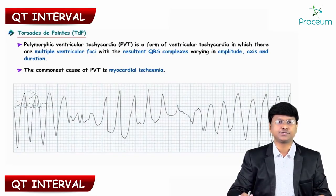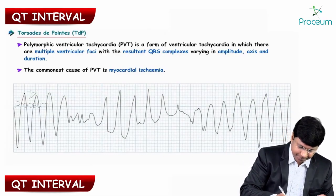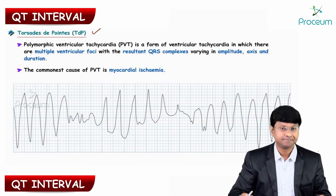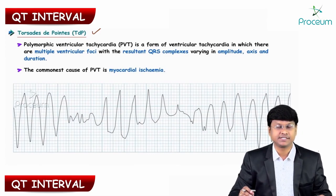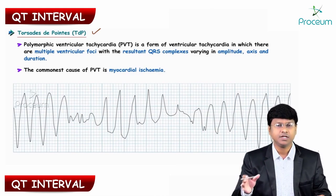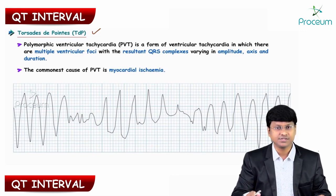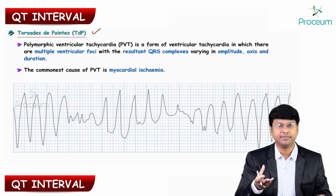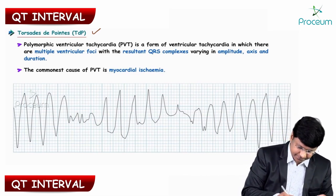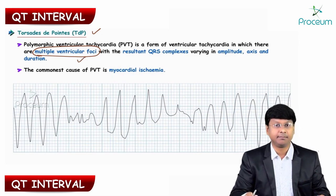As a continuation of the prolonged QT interval discussion, let me discuss the very important topic of torsades de pointes. Torsades de pointes is a polymorphic ventricular tachycardia — it is a ventricular tachycardia but it is polymorphic. The QRS complexes will be of varying morphology because the ventricular arrhythmia originates from multiple ventricular foci.